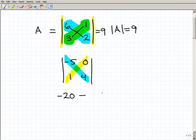So negative 5 times 4 is going to be negative 20 minus 1 times 0, which of course is 0. So the determinant is negative 20. Really easy stuff here.